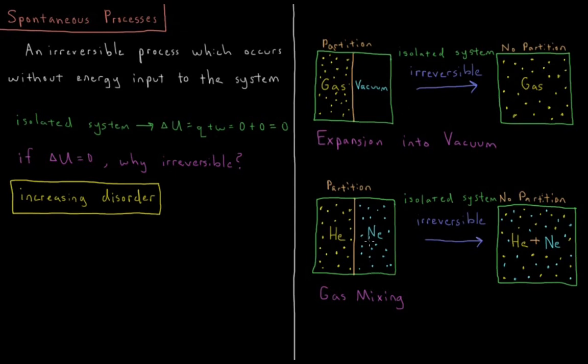Similarly, we can look at the bottom situation here. We have two gases, helium on the left, neon on the right, both at pressures where they're behaving virtually ideally. So if we have a partition between them, and they're perfectly segregated on the left and on the right, then we remove the partition.